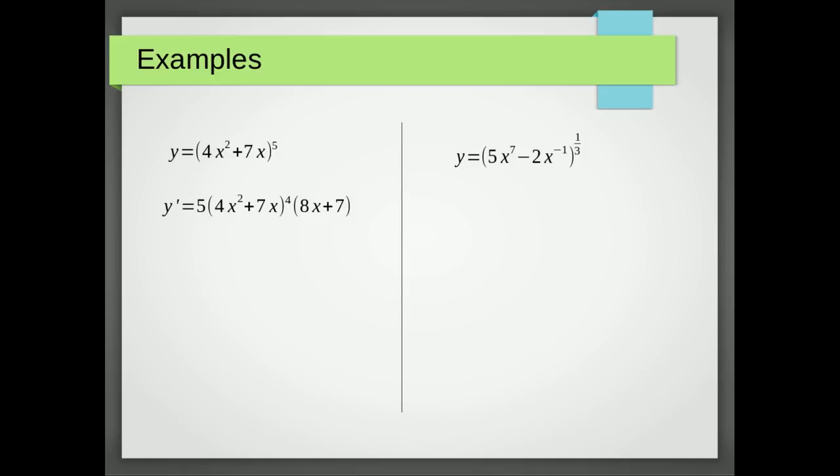We're going to take one away from a third to give us minus two thirds, and then we're going to multiply by the inner bracket differentiated, which is going to be 35x to the 6, and then it's going to be plus 2x to the minus 2. And there we have exactly what we predicted.